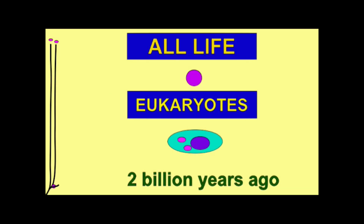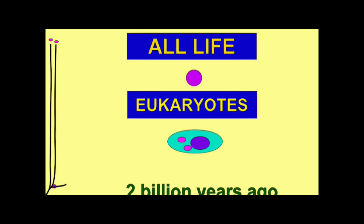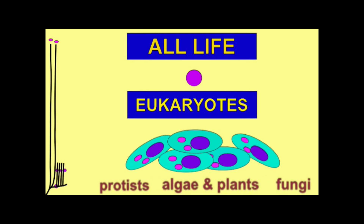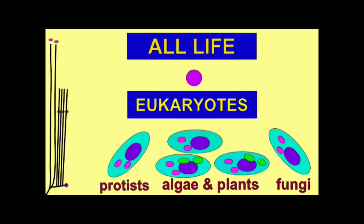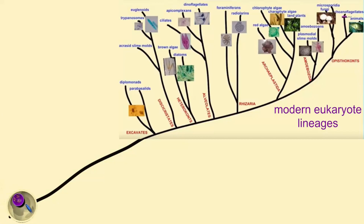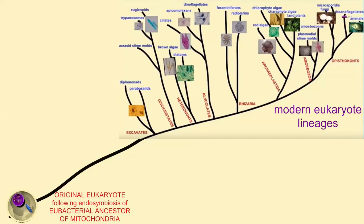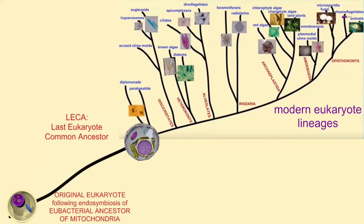Presumably, any features which are shared by eukaryotes ranging from plants, fungi, and animals such as humans and primitive eukaryotes like Giardia, but are not present in any bacteria — these must have evolved somewhere between early eukaryogenesis and LECA.